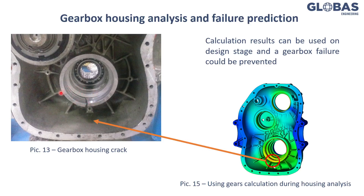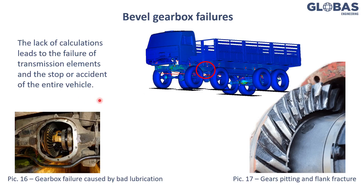So if the manufacturer had performed these calculations, the gearbox would not have failed. There is another gearbox in the vehicle — the bevel gearbox — which also operates in tough conditions. For example, if there are lubrication issues or the design was not optimized for high loads, the gear train would fail. In this case, gear teeth were fractured and broken, as we can see in this photo.